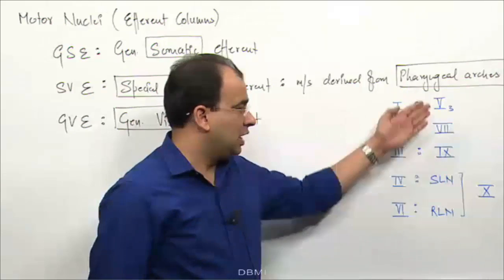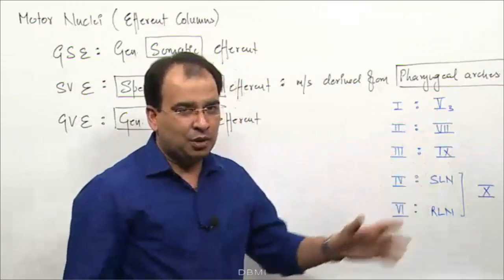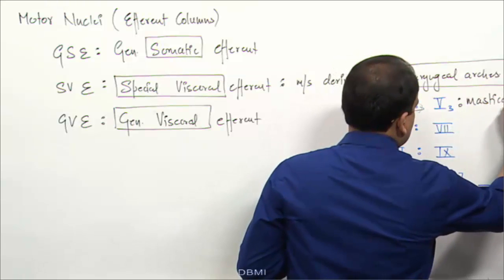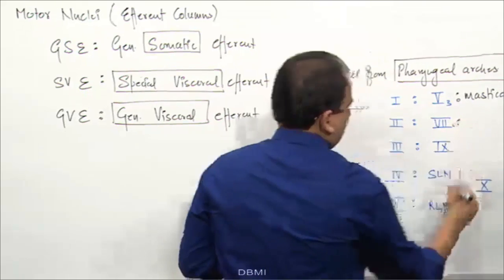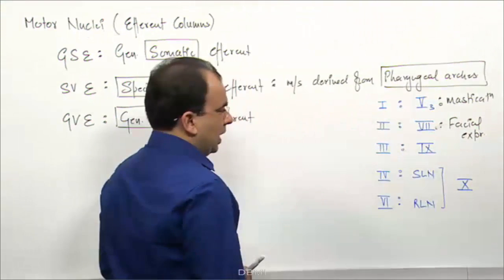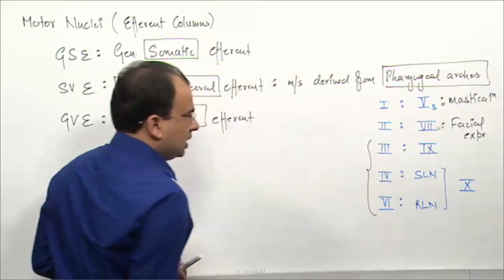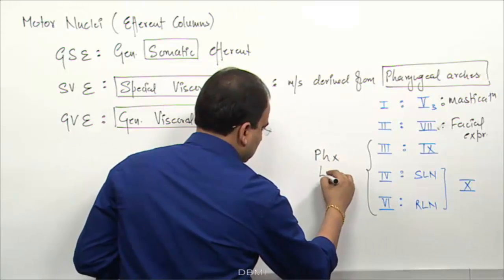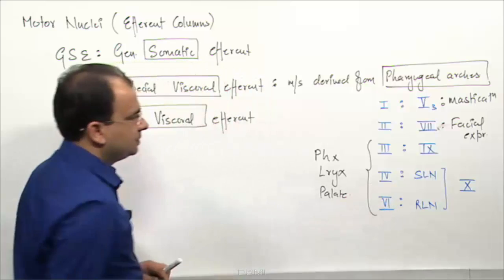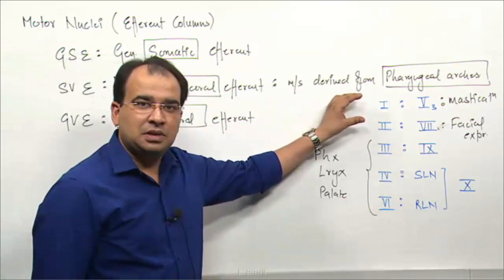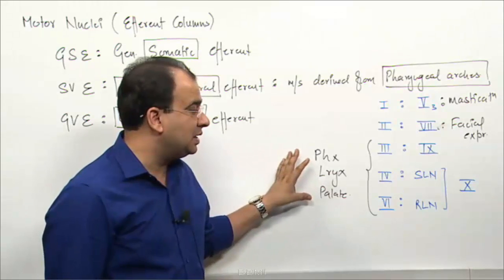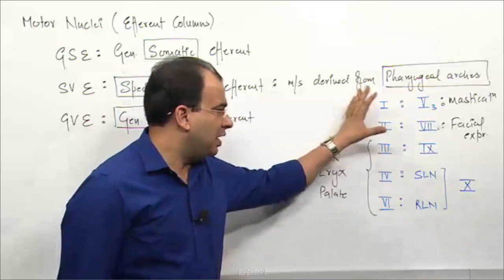Any nucleus in the special visceral efferent column supplies only muscles derived from pharyngeal arches. If you know the nerve, you broadly know the muscles. The mandibular nerve supplies the muscles of mastication. The facial nerve supplies mainly the muscles of facial expression. The glossopharyngeal nerve along with the vagus nerve supplies the muscles of the pharynx, larynx, and palate. So muscles of mastication, facial expression, pharynx, larynx, and palate — all muscles supplied by the vagus and accessory nerve collectively — fall under the SVE column.